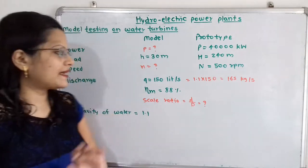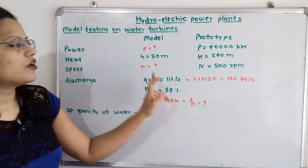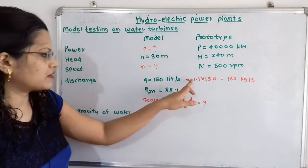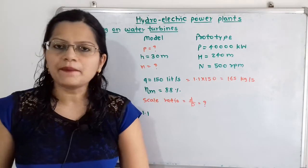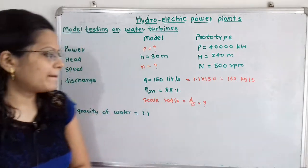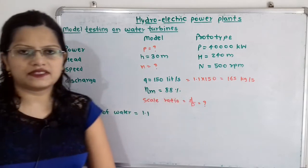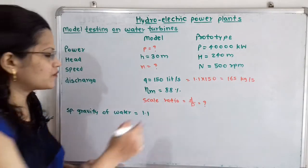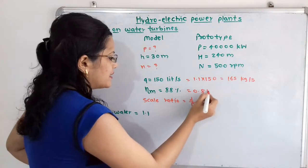Since specific gravity is given as 1.1, when we multiply discharge by specific gravity we convert it into kilograms per second. So 1.1 multiplied by 150 gives 165 kilograms per second. The efficiency of the model is given as 88%, which equals 0.88.